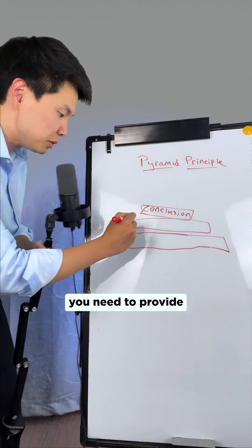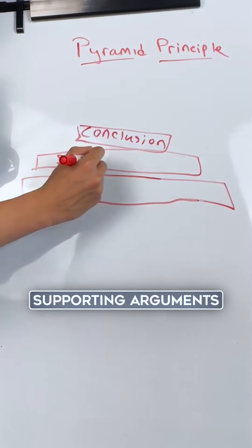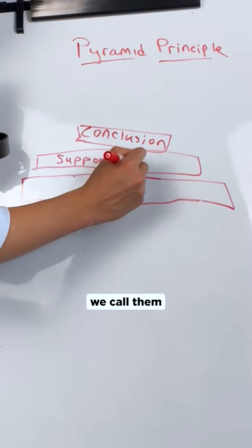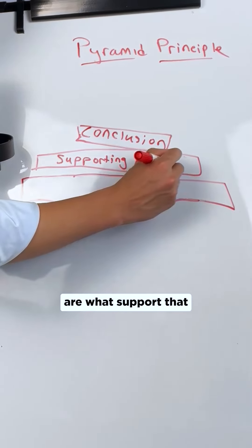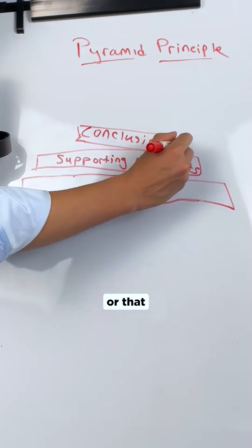The second thing that you need to do is you need to provide supporting arguments. Those arguments, we call them reasons, are what support that bottom line up front or that initial conclusion.